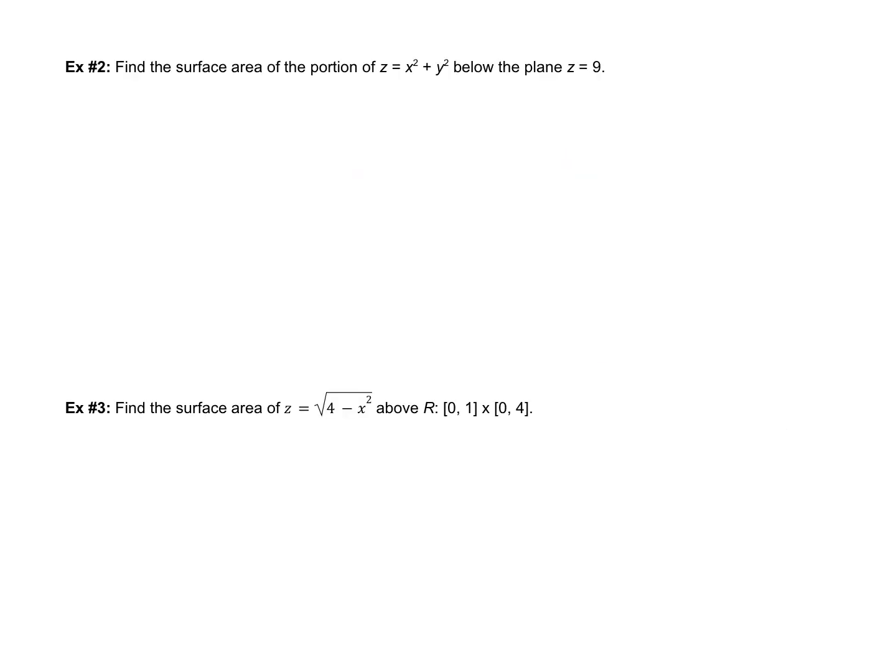Here's the first one. Find the surface area of the portion z = x² + y² below the plane z = 9. I think in this case it might be helpful for us to draw a picture. So z = x² + y². Hopefully we see that that's a paraboloid, and it's going to stop at z = 9.